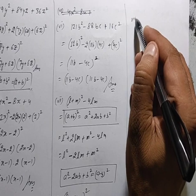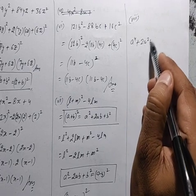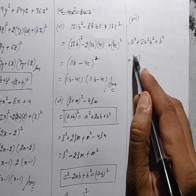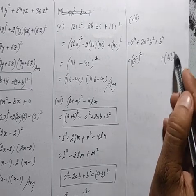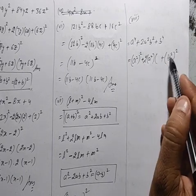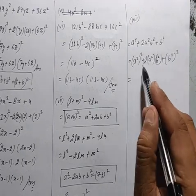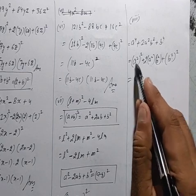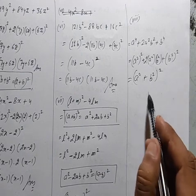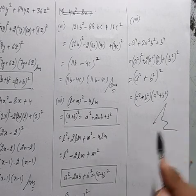8th part: A power 4 plus 2A square B square plus B power 4। A की power 4, A square का square है, और B की power 4, B square का square है। बीच में 2AB यानि 2 into A square into B square। तो A square plus 2AB plus B square identity से: answer है (A square + B square)(A square + B square)।